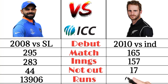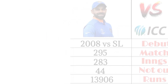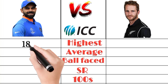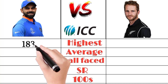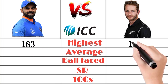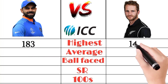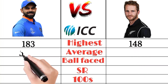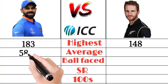Virat Kohli scored 13,906 runs in ODIs and Kane Williamson scored 6,810 runs in ODIs. Virat Kohli's best score in ODIs is 183 and Kane Williamson's best is 148.